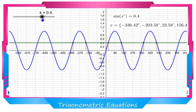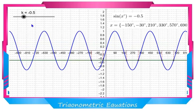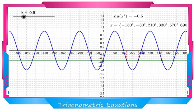If A is negative, there will still be two solutions between 0° and 360°. The solutions are 180° + θ and 360° − θ, where θ is the angle satisfying sin θ = |A|. For example, if sin x = −0.5, you ignore the sign and sin θ = 0.5 gives θ = 30°, so the solutions are 180° + 30° = 210° and 360° − 30° = 330°. This is because sin is negative in the third and fourth quadrants.